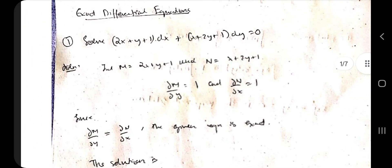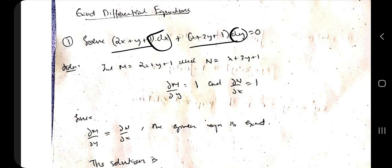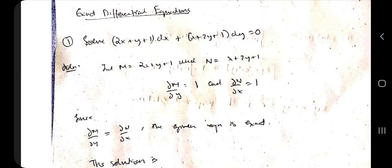The first topic is the exact differential equation. Observe the steps carefully. It will be given with two equations — one with dx and another one with dy. You have to take one as M and another one as N. The one with x is taken as M and the one with y is taken as N.